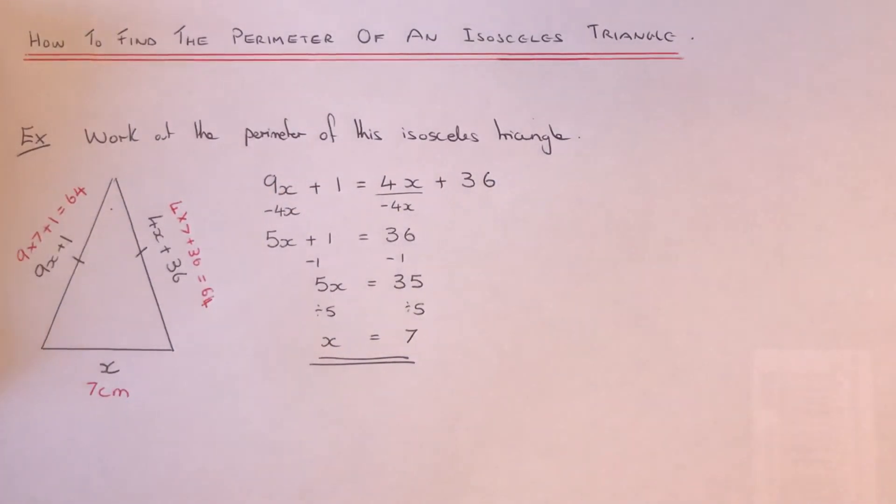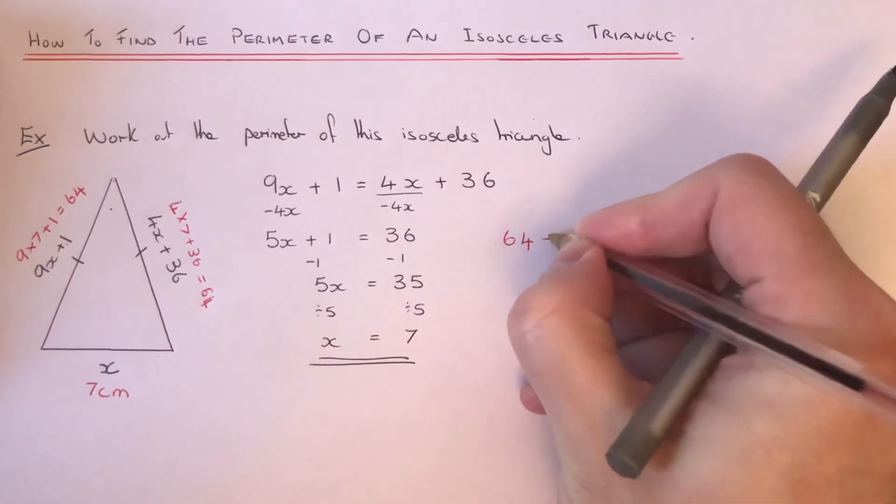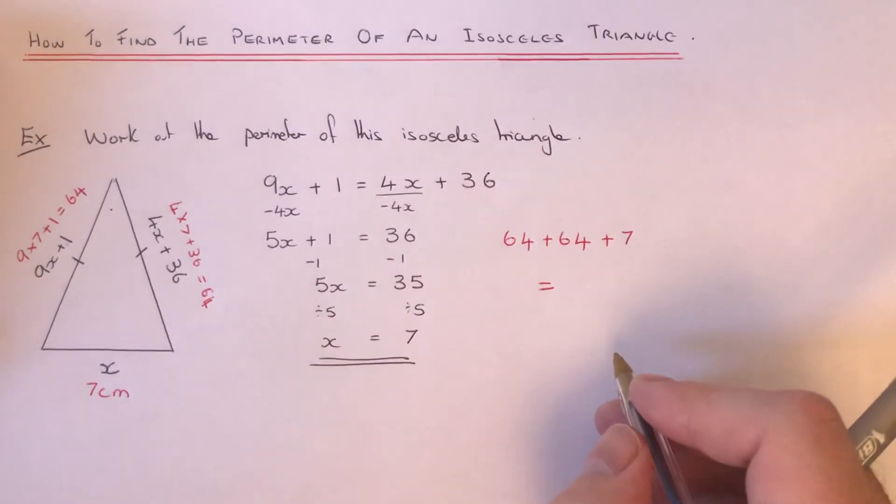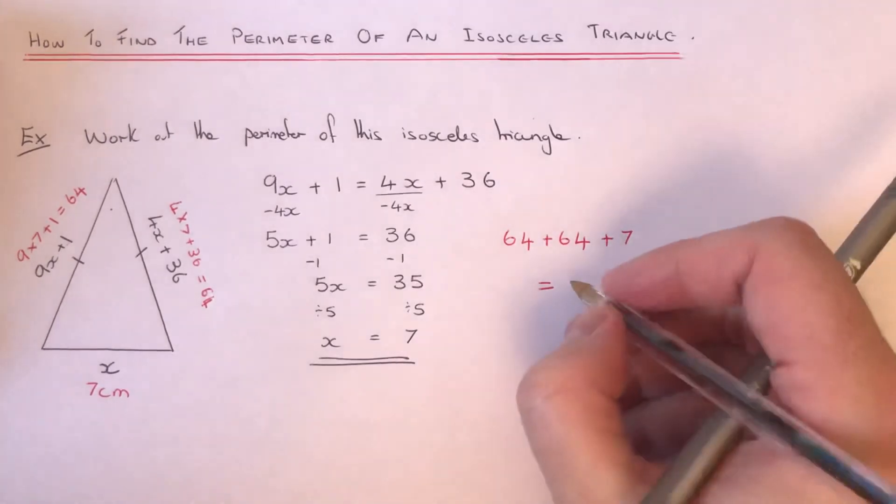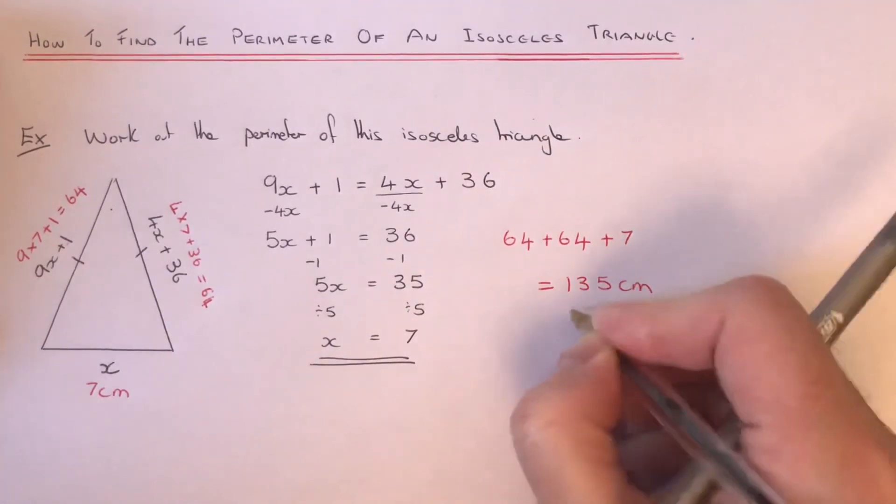Okay, so we've got our three side lengths. So we just need to add these up now. So if we go 64, add 64, add 7, and that will give us an answer of 135 centimeters.